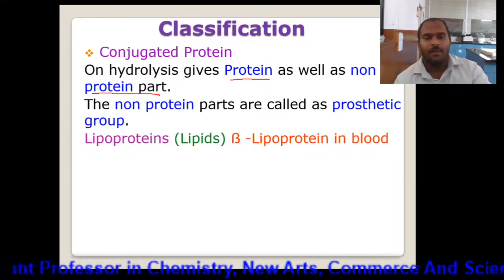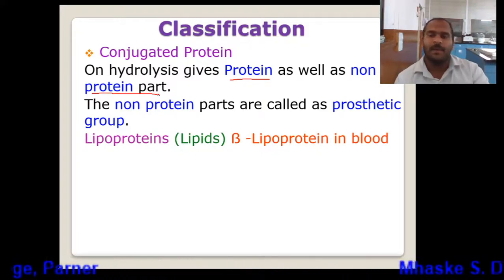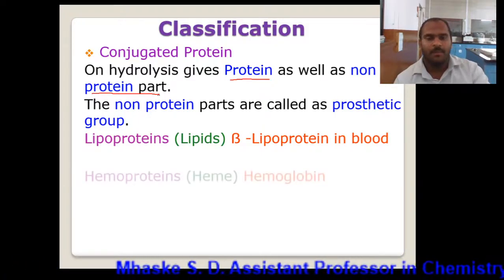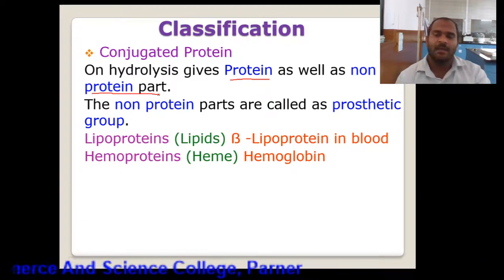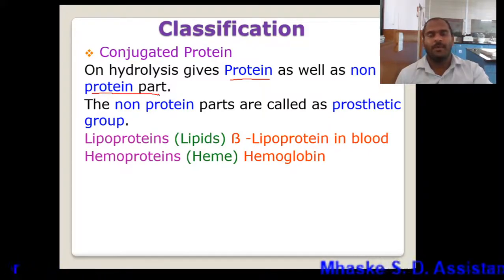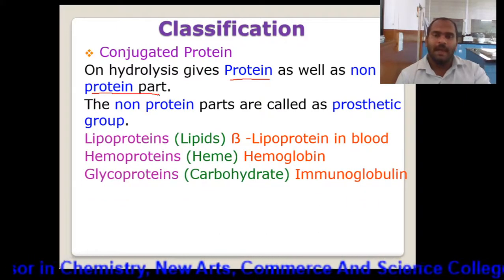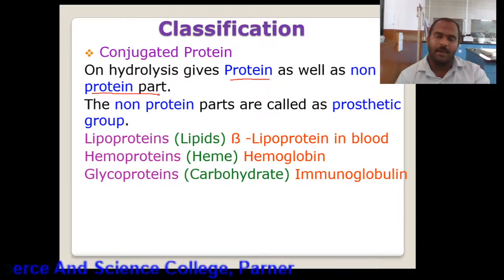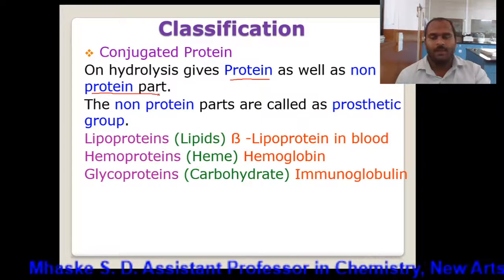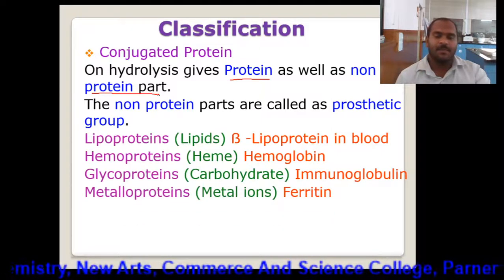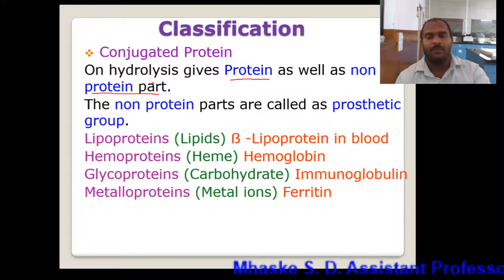Here we can consider some examples. Lipoprotein means it is a combination of a lipid and protein. Lipid is combined with protein to give the formation of a lipoprotein. Example is beta-lipoprotein. The next is hemoprotein. Hemoprotein is a combination of a porphyrin called hemin and a protein. Example is hemoglobin. The next is glycoprotein. Glycoprotein is a combination of a carbohydrate and a protein. Example is immunoglobulin. We are having another example that is metalloprotein. Metalloprotein is a combination of a metal ion and a protein. For example, ferritin.